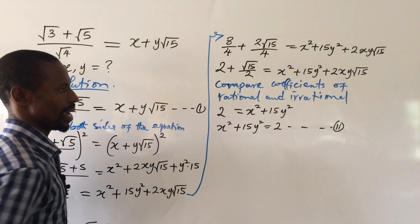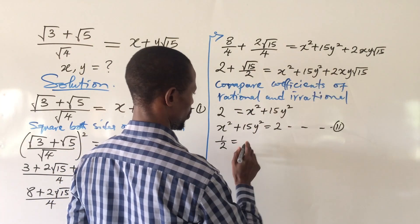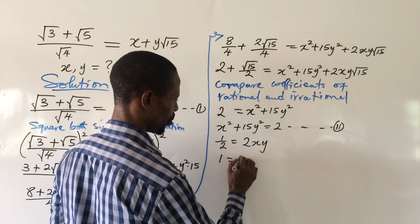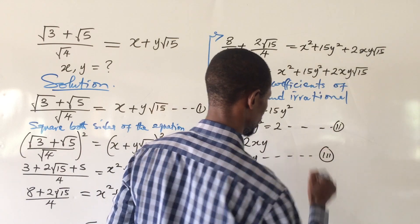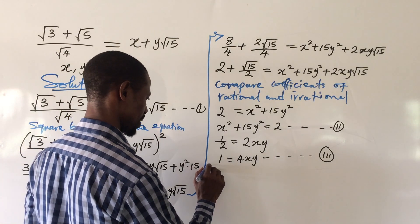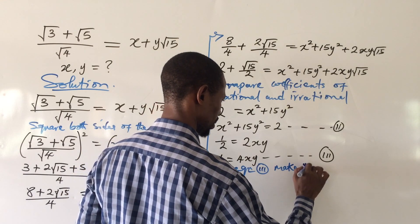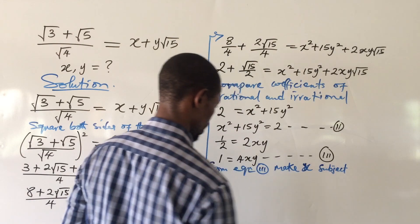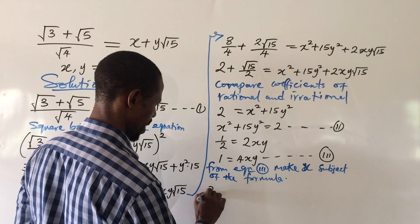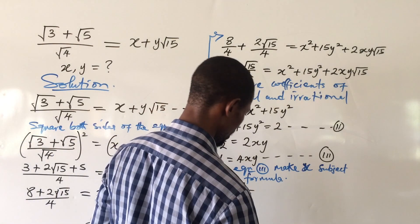Comparing the irrational parts gives us: 1/2 = 2xy, which means 1 = 4xy. We'll call this equation 3. From equation 3, we make x the subject of the formula, giving us x = 1/(4y). We'll call this equation 4.